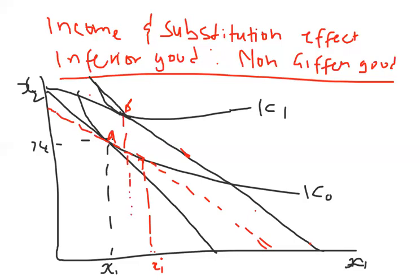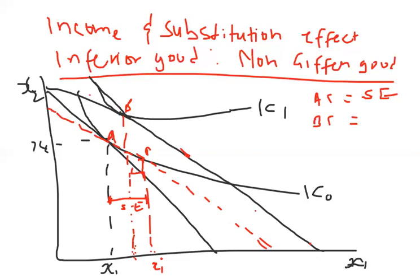So from point A to point C is the substitution effect — A to C equals the substitution effect. And between B and C, that is what we call the income effect. So B to C equals the income effect.